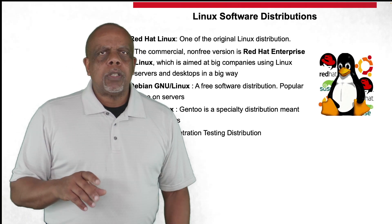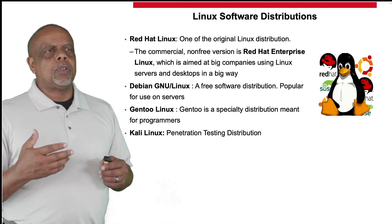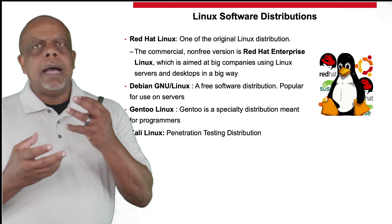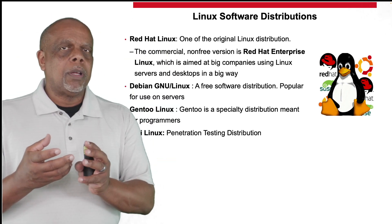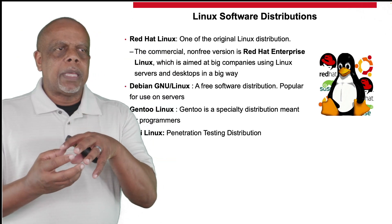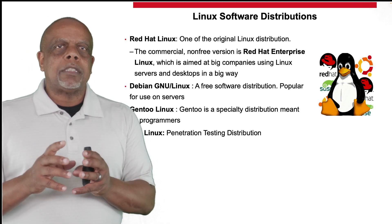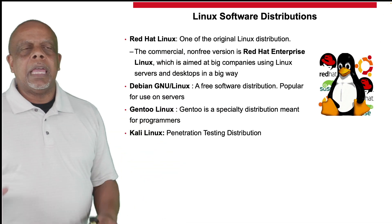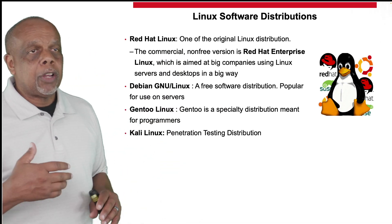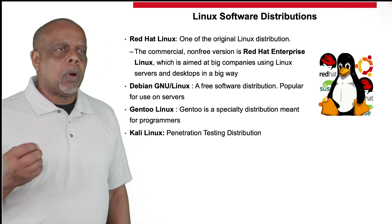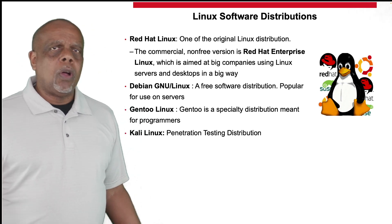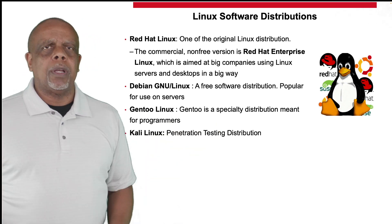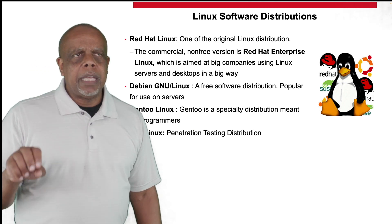There are a lot of Linux distributions. A distribution is a kernel plus operating system applications plus download instructions — that's what makes up a distribution. There's Red Hat, Debian, Ubuntu, Kali, and thousands of others. The great thing about Linux is you can take a kernel, build your own distribution, and launch it — as long as you have the documentation to support it.